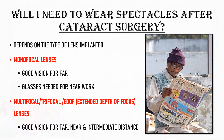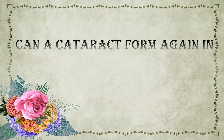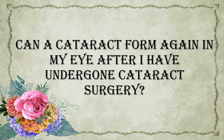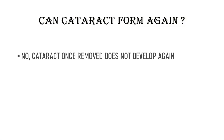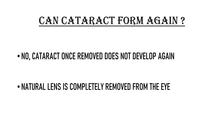Can cataract form again in my eye after cataract surgery? No, cataract once removed does not develop again. During cataract surgery, the natural lens is completely removed from the eye, so there is no possibility of cataract forming again.